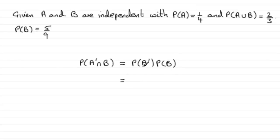Well, the probability of not A, if A was a quarter, that's going to be three quarters. And we've got the probability of B, as I said from the previous part, that's 5 over 9.